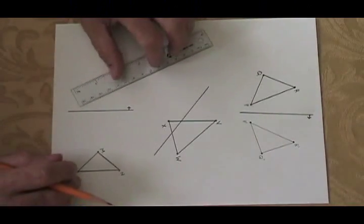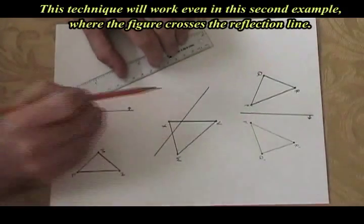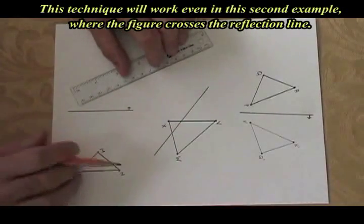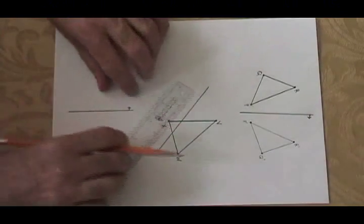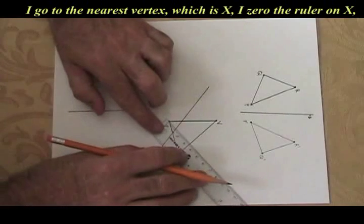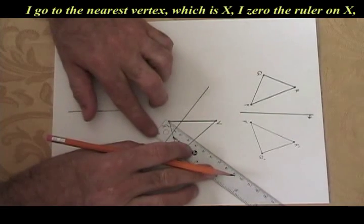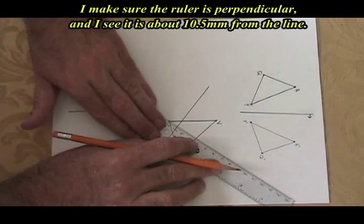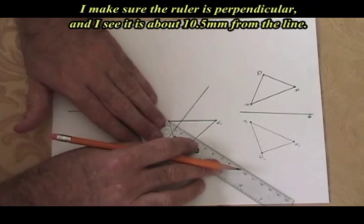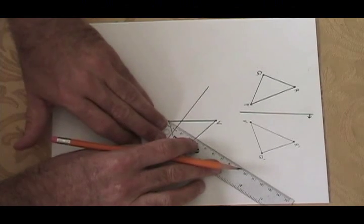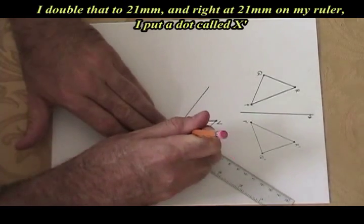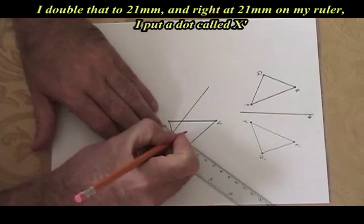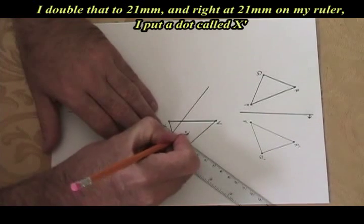This technique will work even in this second example where the figure crosses the reflection line. I go to the nearest vertex to the line, which is X. I zero the ruler on X. I make sure the ruler is perpendicular and I see it's about 10.5 millimeters. So I double that to 21 and right at 21 on my ruler, I draw my X'.